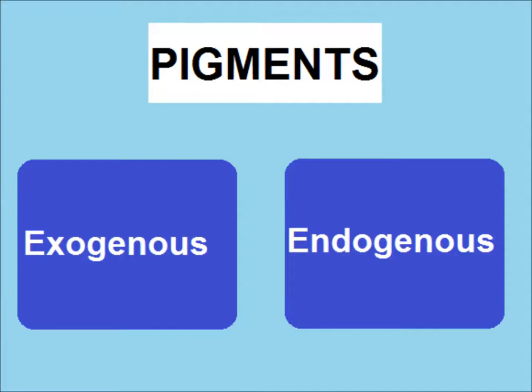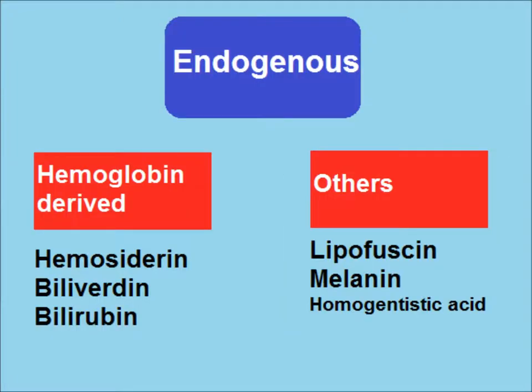Pigments can be exogenous or endogenous. Endogenous pigments are further subdivided into hemoglobin-derived and non-hemoglobin-derived. Hemosiderin, biliverdin, and bilirubin are hemoglobin-derived, while lipofuscin, melanin, and homogentisic acid are non-hemoglobin-derived pigments.